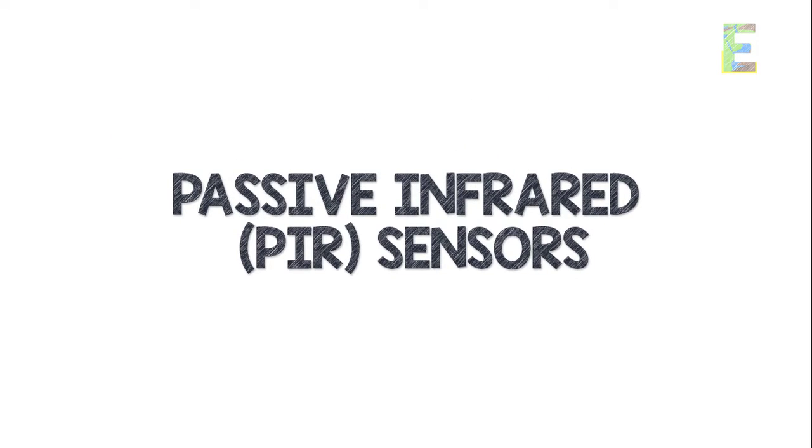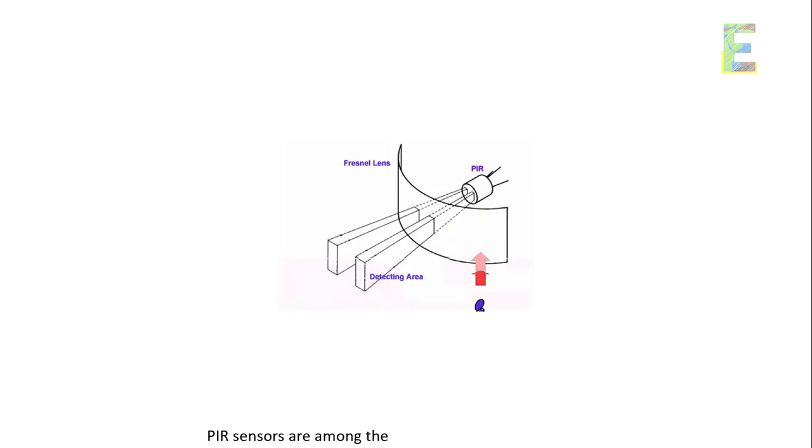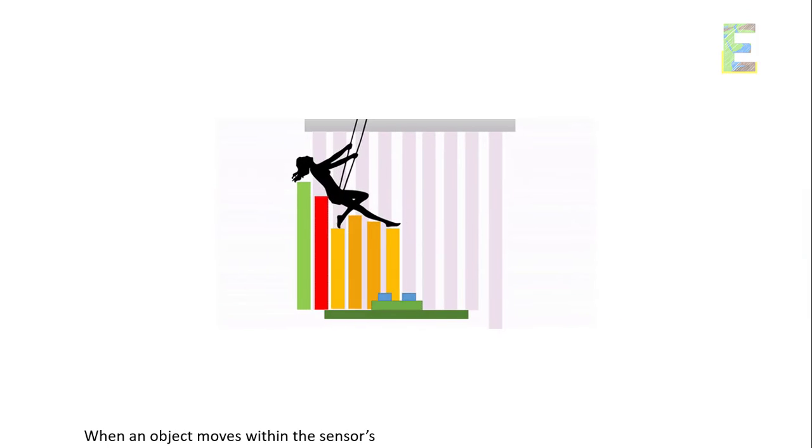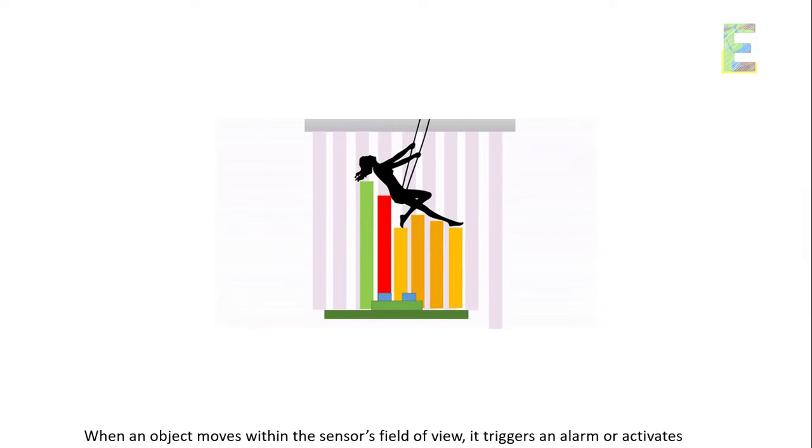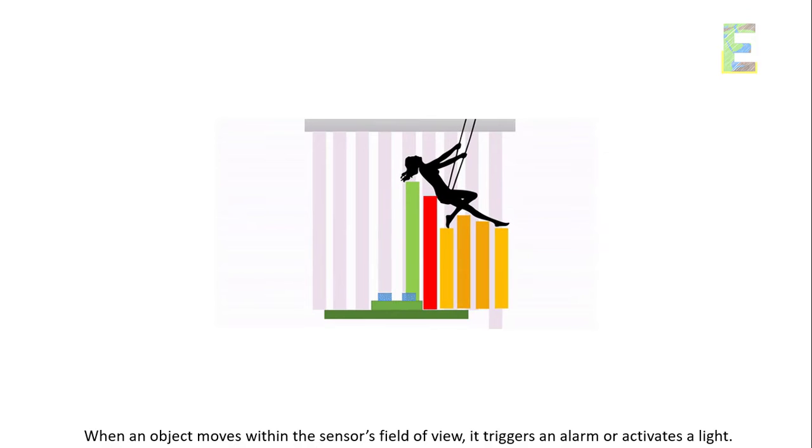Passive infrared PIR sensors are among the most common motion detectors. They detect changes in infrared radiation emitted by warm objects. When an object moves within the sensor's field of view, it triggers an alarm or activates a light.